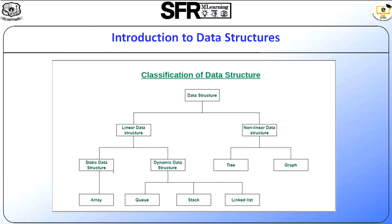For dynamic data structures, examples include queue, list, linked list, and stack. Dynamic means that during execution, the list, stack, or queue can grow or shrink dynamically at execution time. Another category is non-linear data structures. Examples of non-linear data structures are trees and graphs.